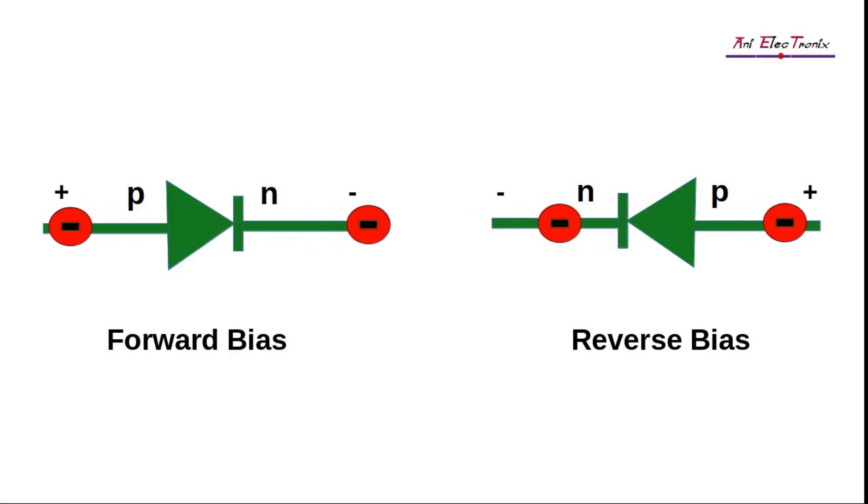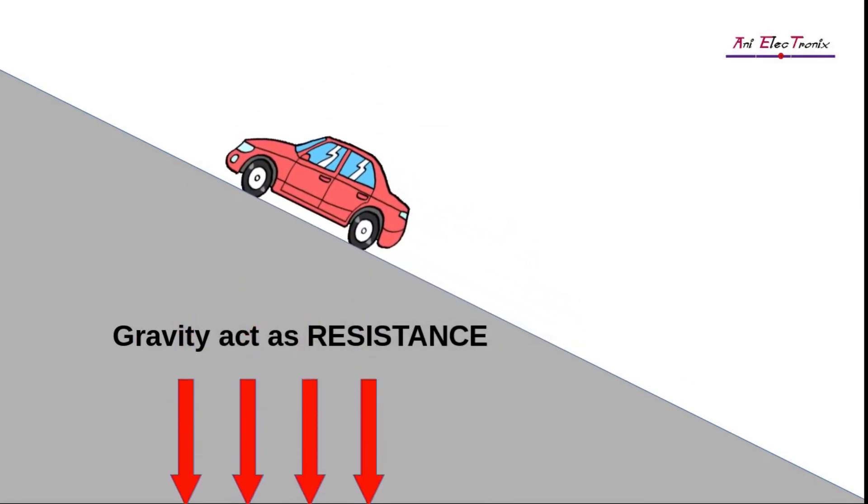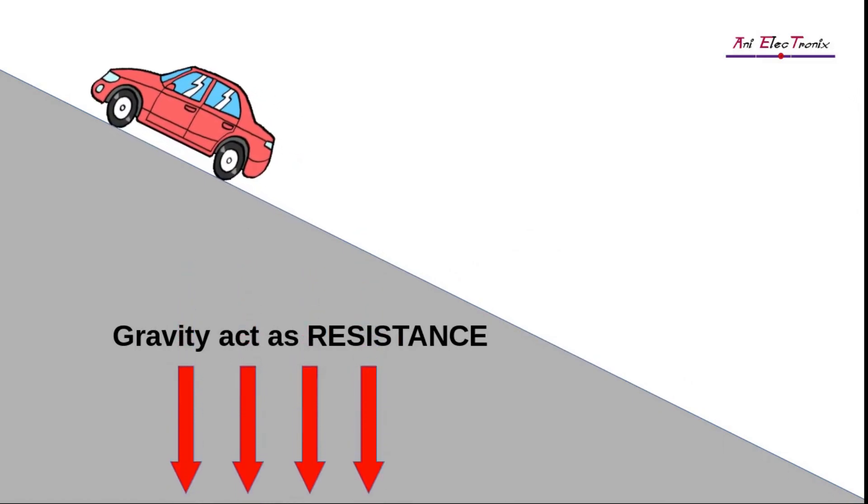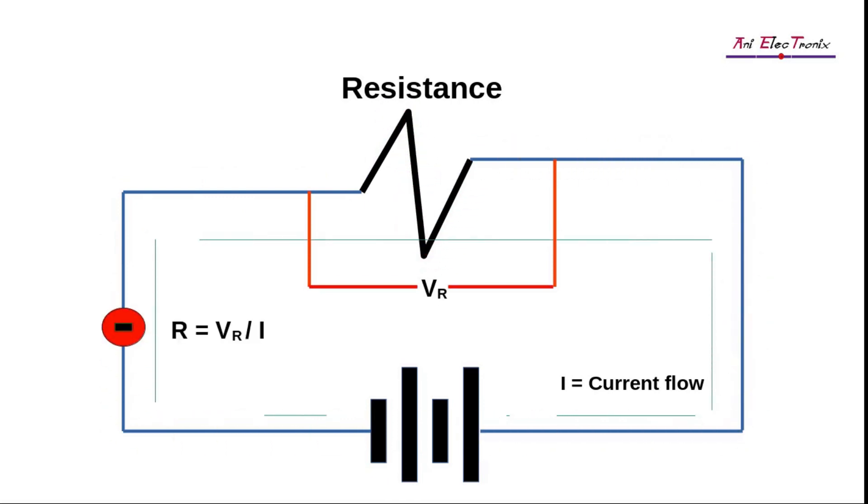Let us review what resistance is. The simplest definition of resistance is to refuse to be influenced by something that prevents or slows us down. Resistance in electronics refers to what opposes current flow. Resistance is measured by dividing the voltage drop across a resistor by the current flowing through it. It is measured in ohms.